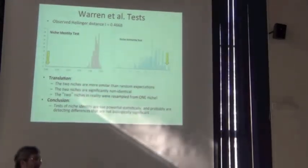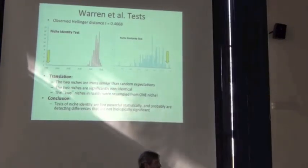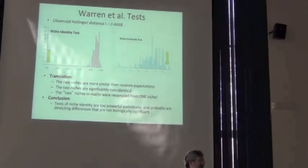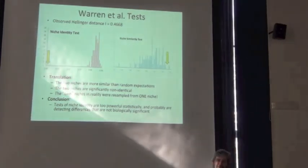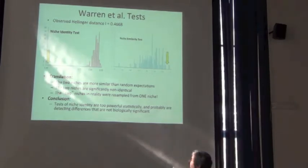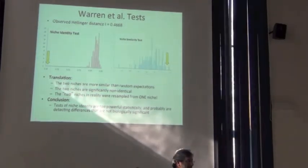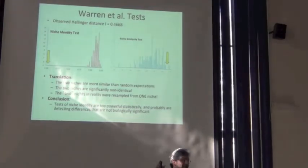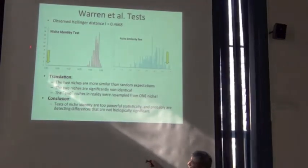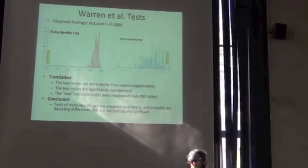If you were asking a question of niche identity, get a load of this. The same two distributional areas can be simultaneously not identical, but surprisingly similar.